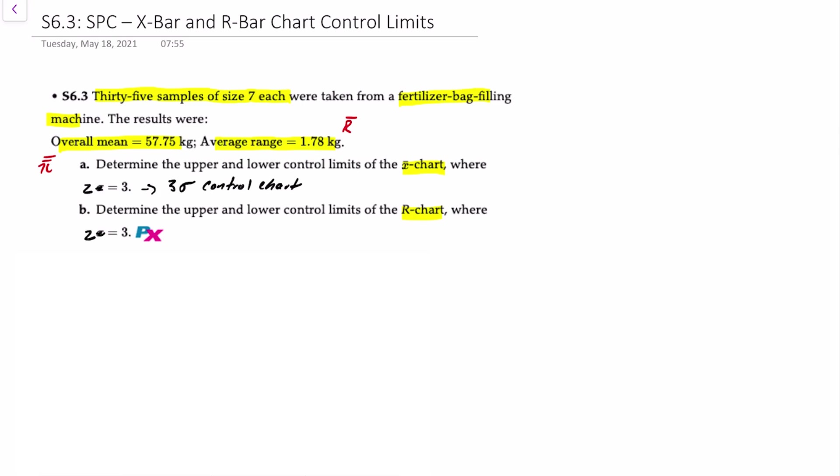If you interpret sigma to be 3, then what you would do is say well the question's provided me with the population or process standard deviation or sigma and then I can go ahead and use the other formula, but that's not the case here.